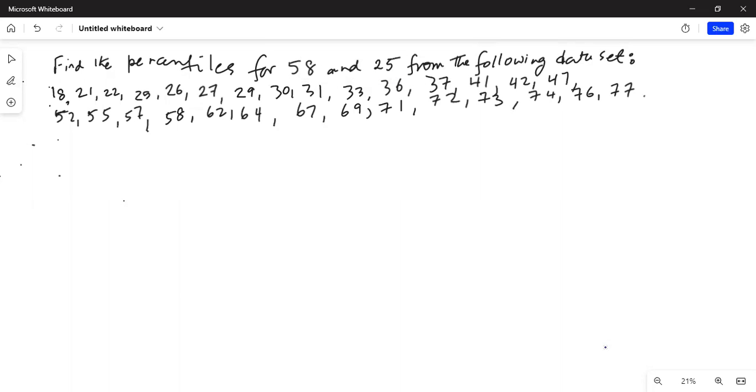Find the percentiles for 58 and 25 from the following data set. The data set has already been arranged from the lowest to the highest - that means it has been arranged in ascending order.